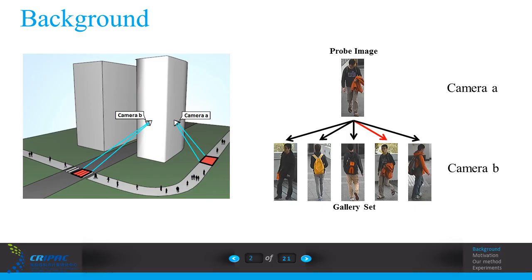Person re-identification is an important task in video surveillance. Given the image of camera A, the task focuses on finding the image with the same person in camera B.